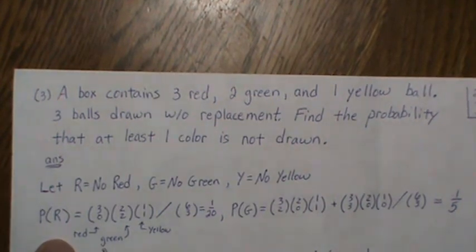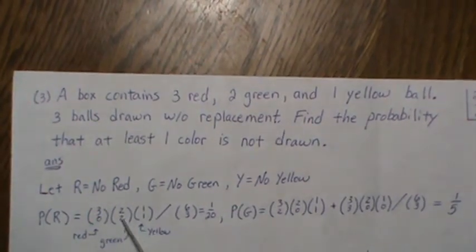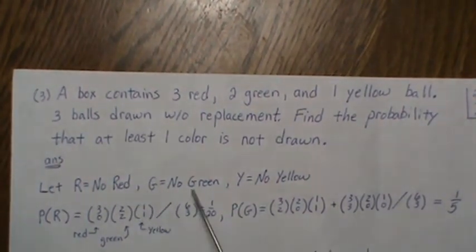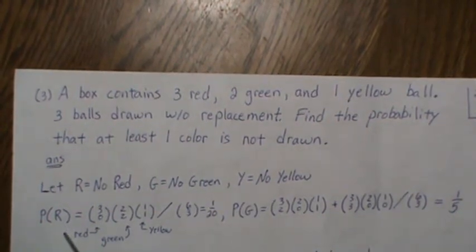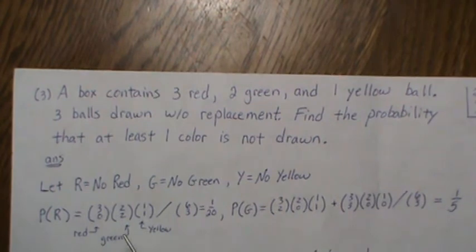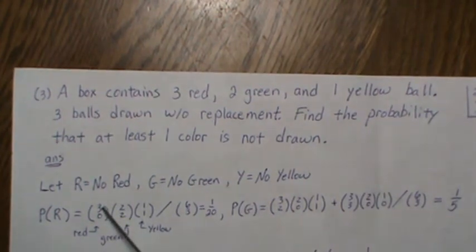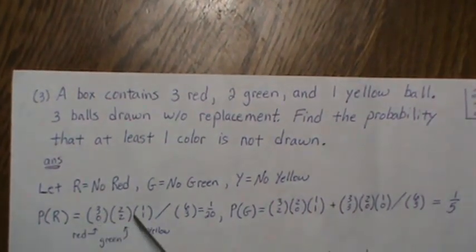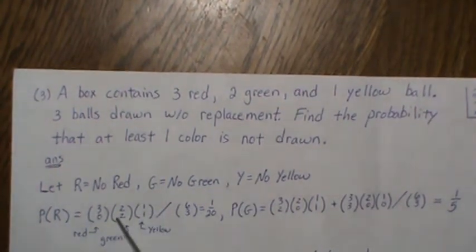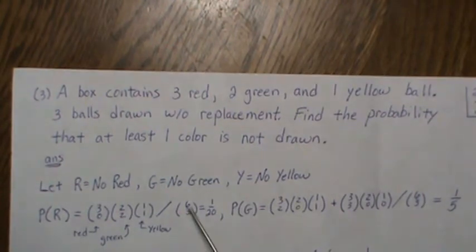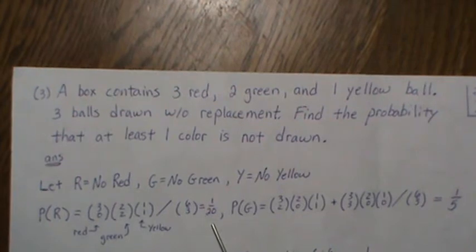The notation used is that we represent red, green, and yellow in the same order. The probability of no red uses the hypergeometric distribution: three red choose zero, two green choose two, one yellow choose one, all over six choose three. That equals 1/20.